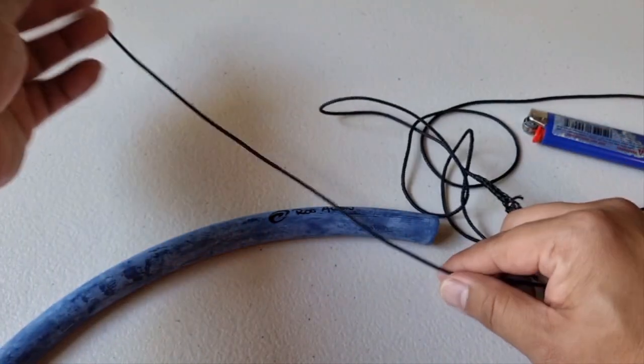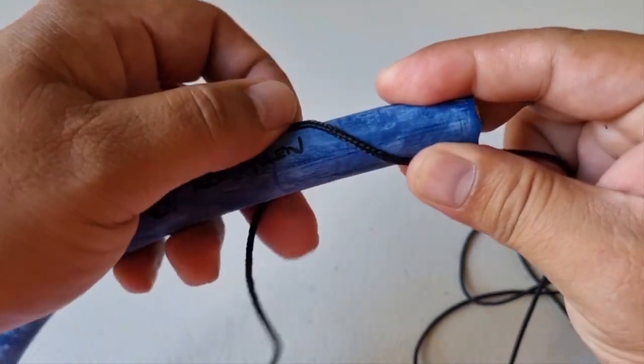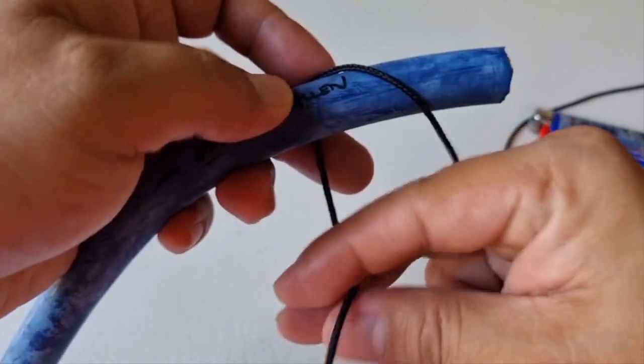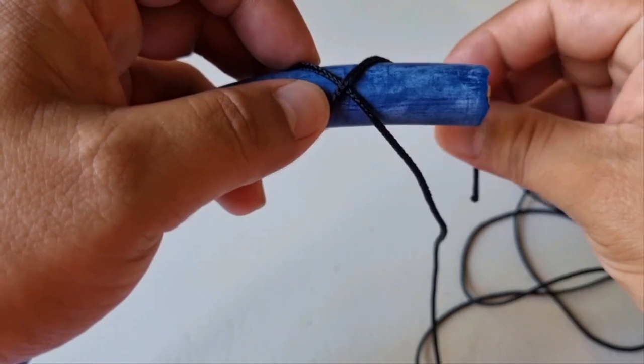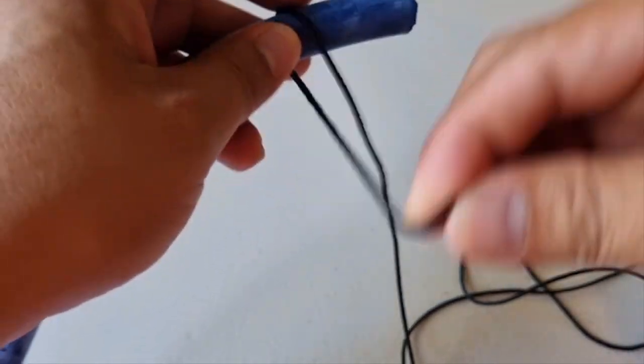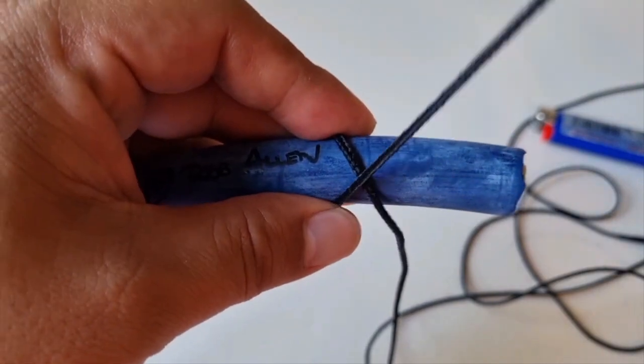Yung constrictor cord. So, slant, then sa ilalim, X. And then, so makita mo parang X sya over.